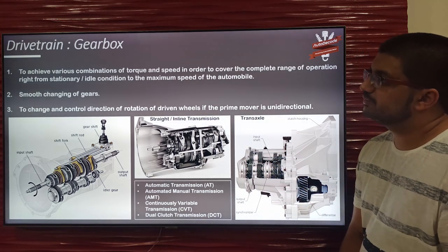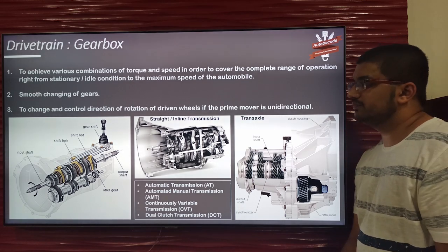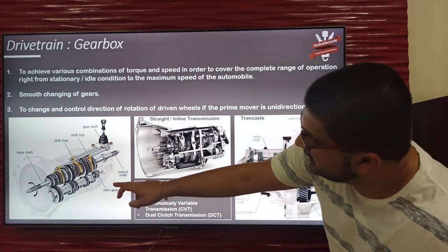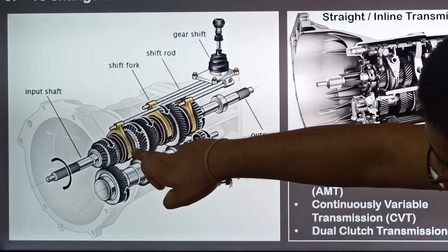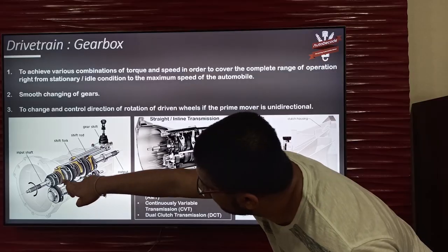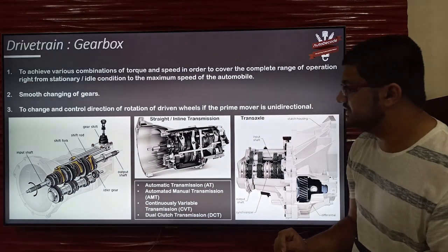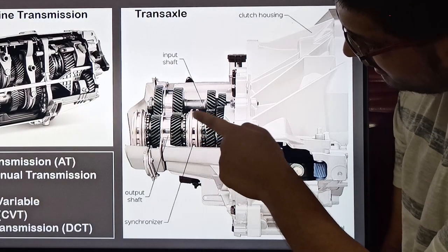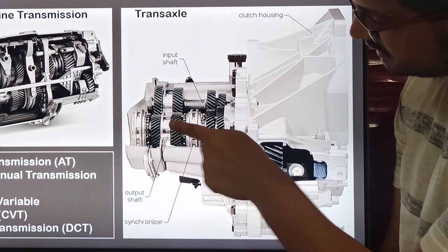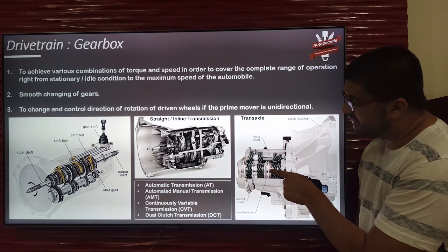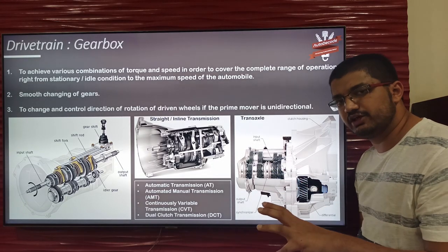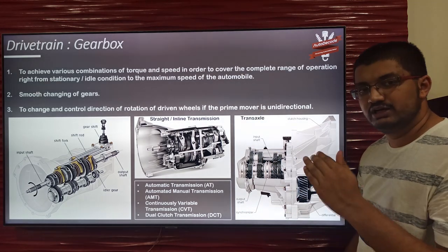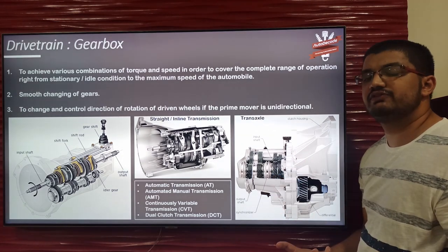The next function is smooth changing of gears, done by the synchro cone assembly. This synchro cone assembly is used to engage one of the two gears. It enables very smooth selection and shifting of gears from one gear to another. This is another function of the gearbox — reducing jerk, noise, and vibration and shifting gears smoothly.